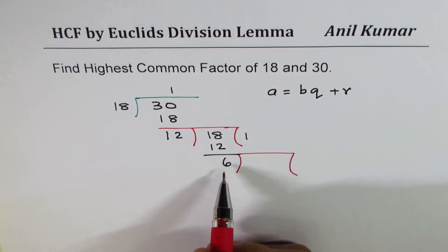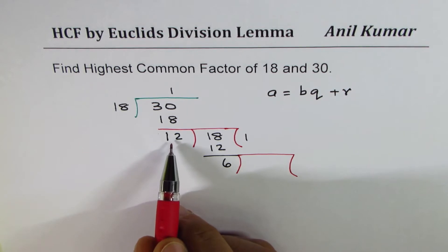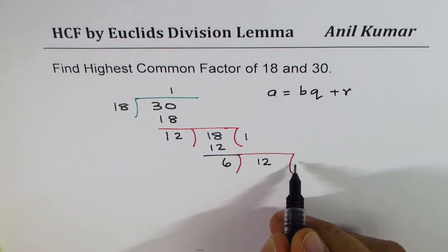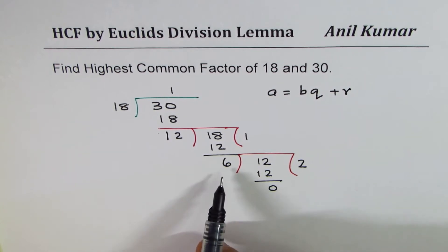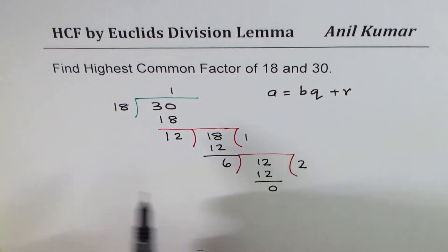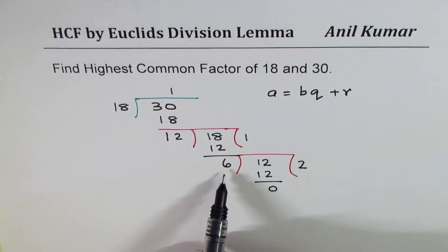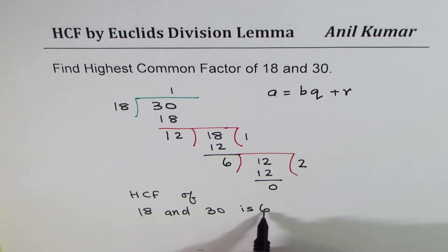We again divide. This time the divisor is 6, which was the remainder, and the earlier divisor becomes the dividend. So 6 times 2 is 12. The remainder is 0. That means 6 is a factor of both 18 and 30. Whenever you get 0, the divisor becomes the highest common factor. So the highest common factor of 18 and 30 is 6.